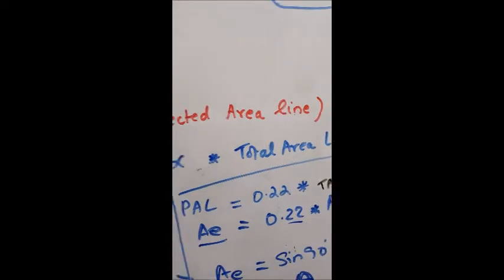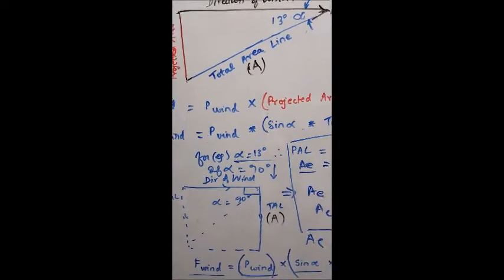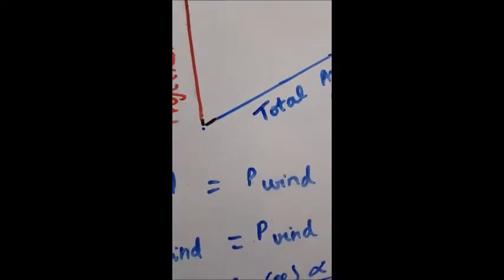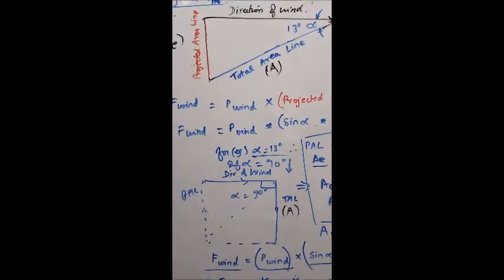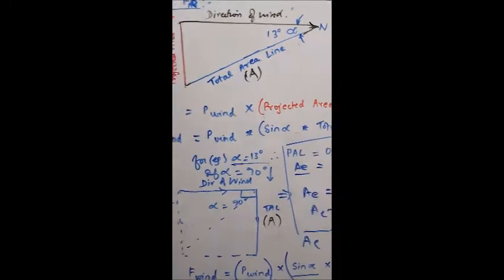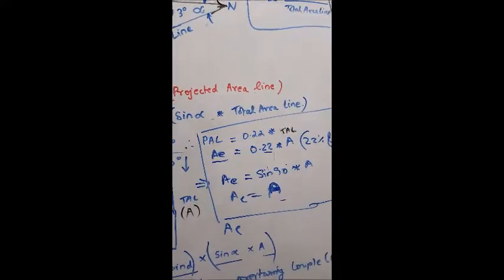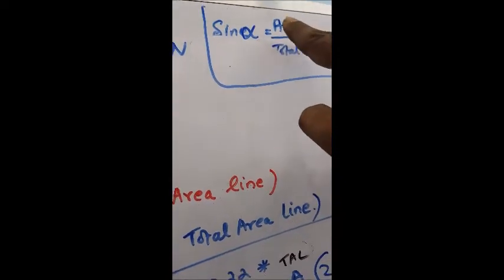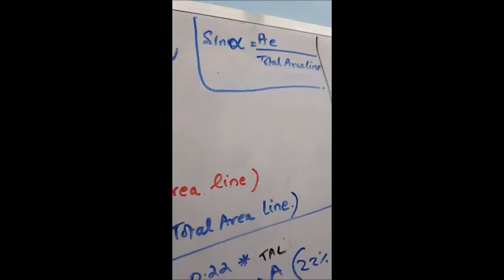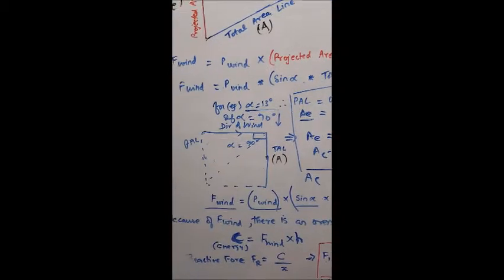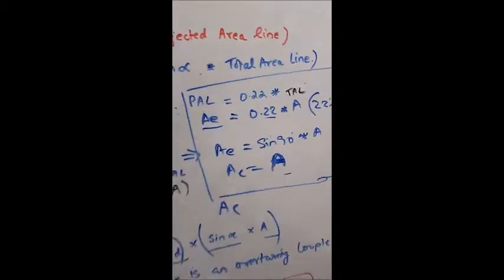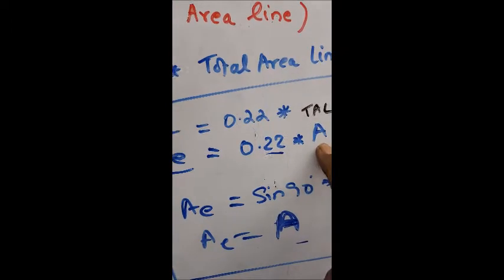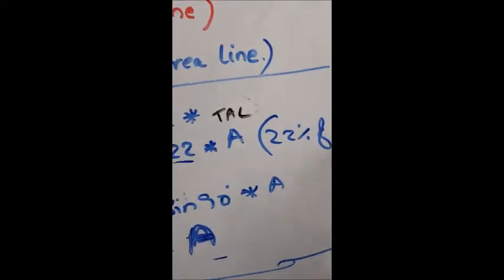The area will be under maximum pressure only when we take the projection of it. The wind force P_wind is the pressure of the wind times the projected area, which is sine alpha times the total area A. With alpha equal to 13 degrees, sine 13° is approximately 0.22, meaning the projected area is about 22% of the total area.